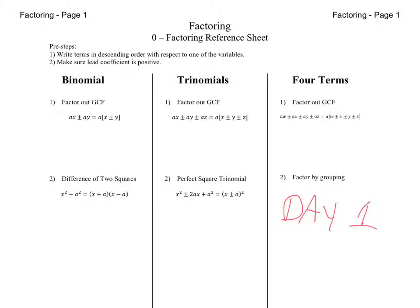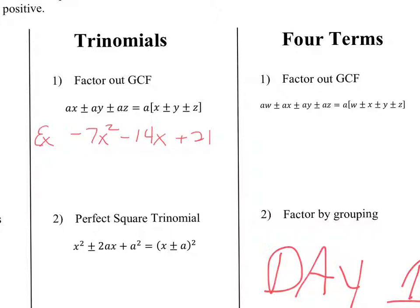Our next step is going to be to factor out the greatest common factor. For example, if we had the trinomial — that means three terms — of negative 7x squared minus 14x plus 21, the first step is to factor out the GCF. The GCF in this case is negative 7, leaving us with x squared plus 2x plus 3. You would proceed from there using one of the other factoring methods for trinomials, but always start out to see if there is a GCF.